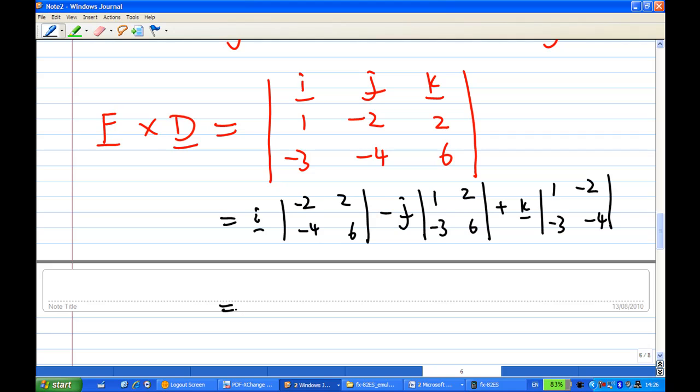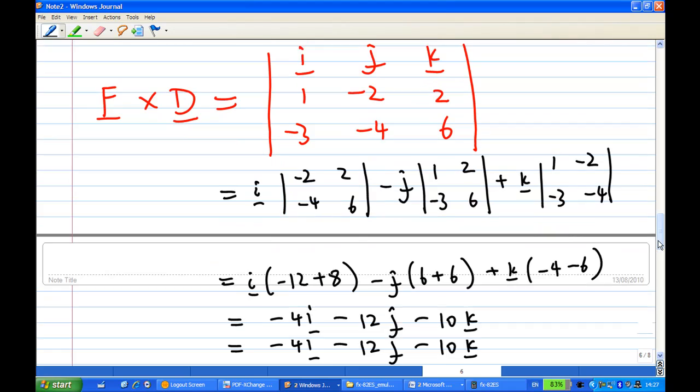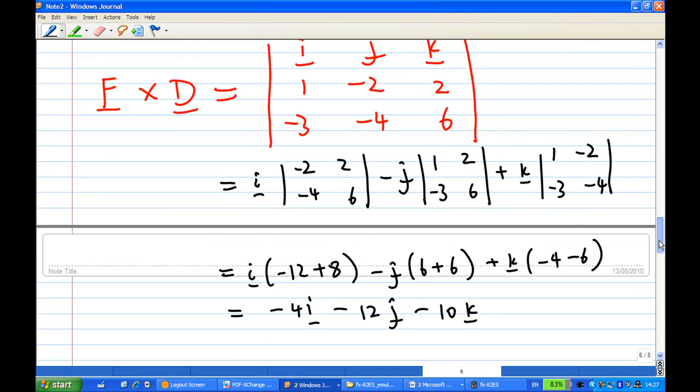You get i times minus 12 plus 8, minus j times 6 plus 6, plus k times minus 4 minus 6. So you get minus 4i, minus 12j, and minus 10k. This vector will be perpendicular to both F and D.